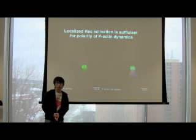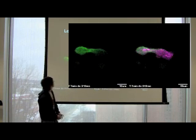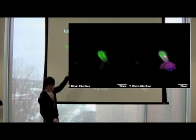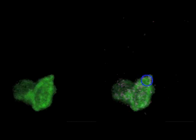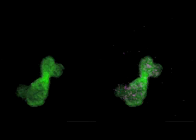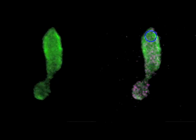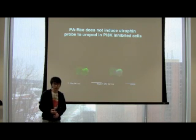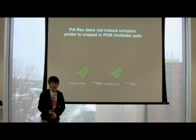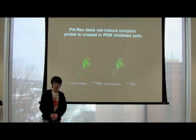We combined PA-RAC with probes for stable F-actin. In the control movie during photo-activation, stable F-actin is localized under the tail. In the next movie, PI3 kinase is inhibited, and under PI3 kinase inhibition, surprisingly, photo-activation of PA-RAC can still induce protrusion. However, the polarity of F-actin dynamics is reversed. This suggests PI3 kinase regulates the polarity of F-actin dynamics in a pathway separable from RAC-mediated protrusion.